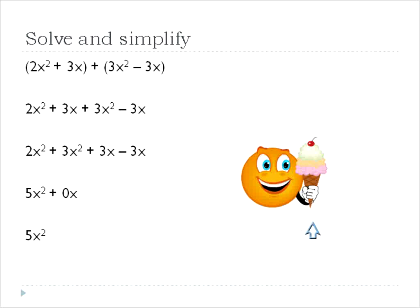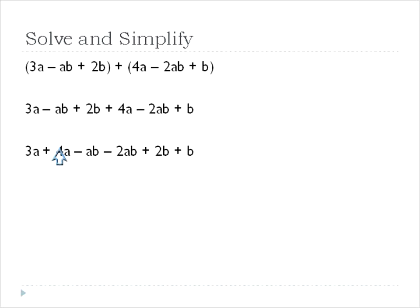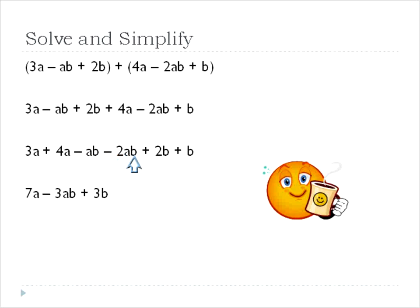Continuing on with our food theme — with a bit of a larger polynomial — here we are adding again. So we're going to add 4a, we're going to add negative 2ab, and we're going to add a positive b. So in our first step it will look like this. Then we will join our like terms together: we'll put our a's together, we'll put our ab's together, and we'll put our b's at the end together. Then we'll join them: 3a plus 4a is 7a. Negative ab minus 2ab will give us minus 3ab. And then 2b plus b will give us 3b.